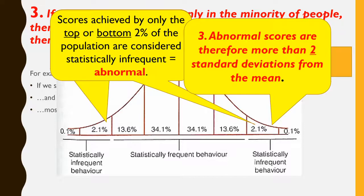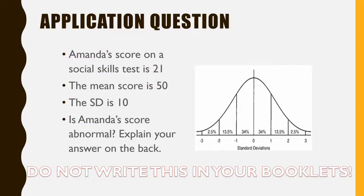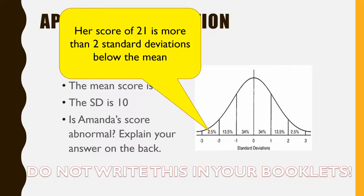If you don't understand that, just learn what it says. If you don't understand how the distribution curves work, all you need to know is that anything that occurs in a minority, two standard deviations away from the mean, is abnormal. So how do we apply this? It is quite difficult. Don't write this in your booklets at the moment, this is just to demonstrate to you. Amanda's score on a social skills test is 21. The mean score is 50. The standard deviation is 10. Is Amanda's score abnormal? Explain your answer on the back.